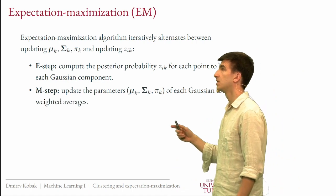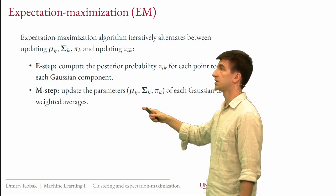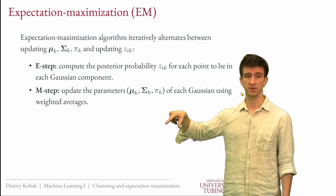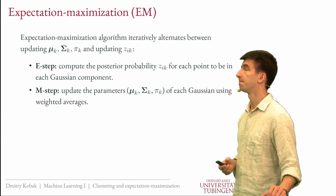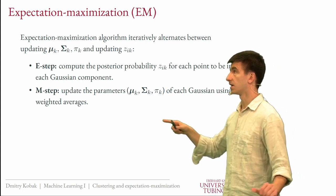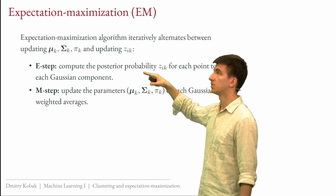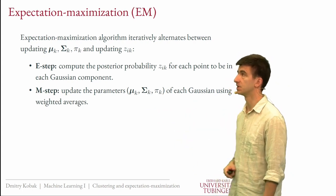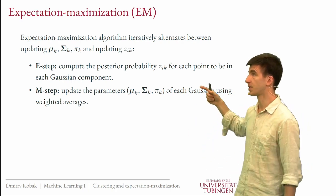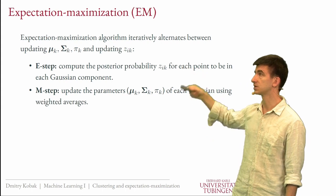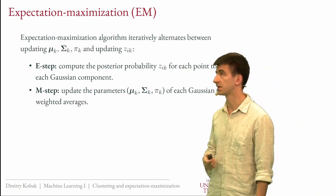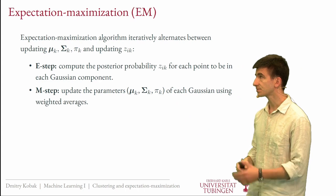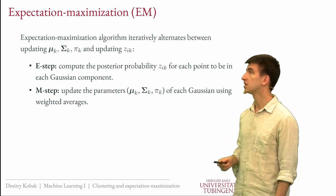In the M step (maximization step), we update all parameters of each Gaussian using the derived weighted-average formulas — computing the weighted means, weighted covariance matrices, and weighted fractions as the new pi values. Then we go back to the E step, recomputing posterior probabilities with the new parameters, and alternate until convergence. This strongly resembles Lloyd's algorithm, but here we have more parameters (covariance and weights) and we use soft rather than hard cluster assignment.